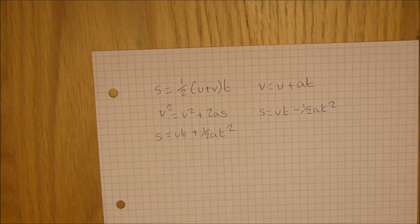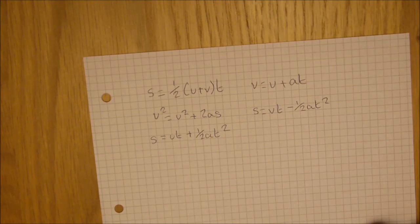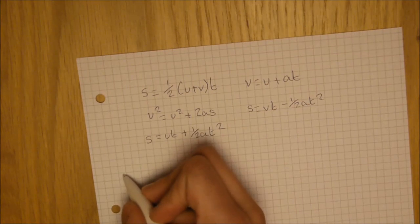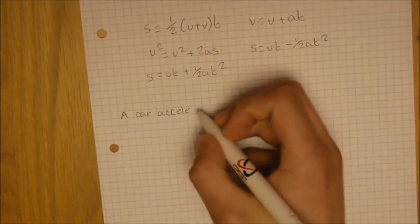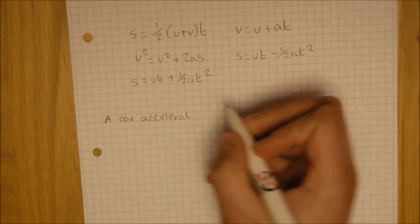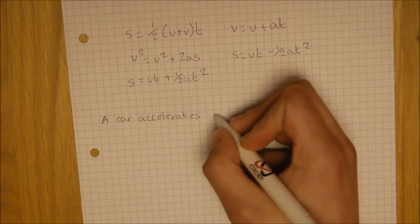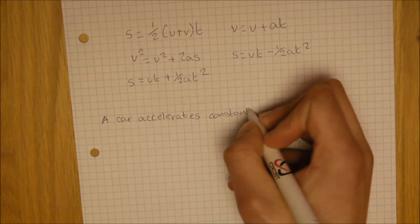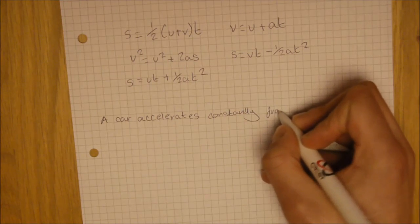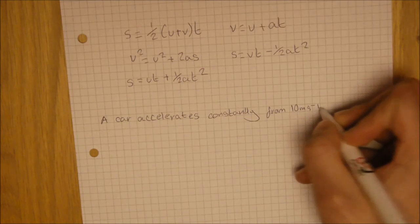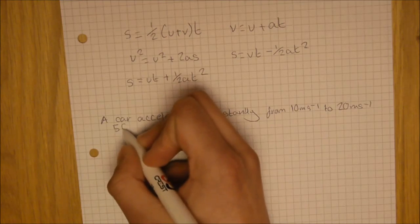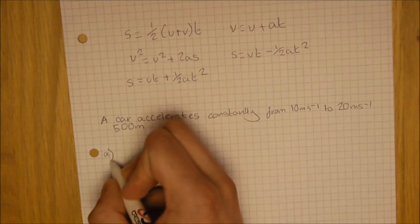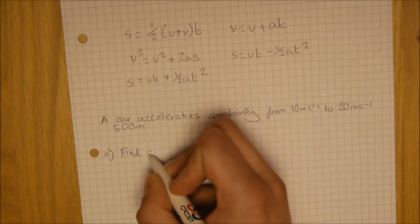And these are basically the fundamental principles of them. So we're going to take a question and we're going to see how it goes. We're going to say a car accelerates constantly from 10 meters a second to 20 meters a second, 500 meters. Find acceleration. There's two parts, but we'll do the first one. Find acceleration.